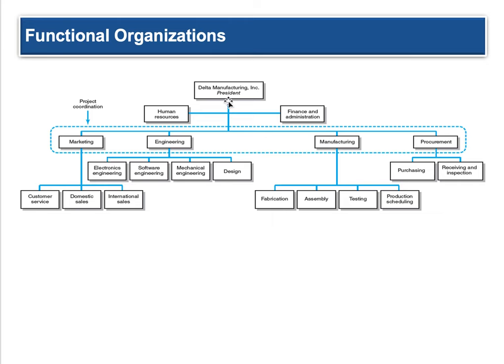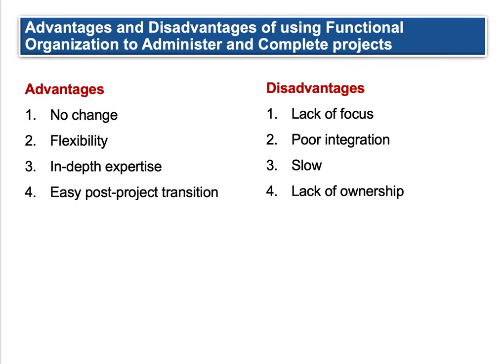This looks like a traditional structure. You have a president up top, human resources, VPs, and CFOs. Then you have all the major departments: marketing, engineering, manufacturing, procurement — obviously this can differ across organizations. Within marketing you have customer service, inside and outside sales, domestic and international. Engineering has all its different departments, and manufacturing everything needed to make a product, while procurement is like supply chain. The project is divided across these departments as additional responsibilities, so it stays within the same corporate structure. Advantages include no real change to the corporate structure, flexibility across departments, in-depth expertise from marketing, engineering, and manufacturing, and easy post-project transition because nothing really changed — you just take it off their plate.